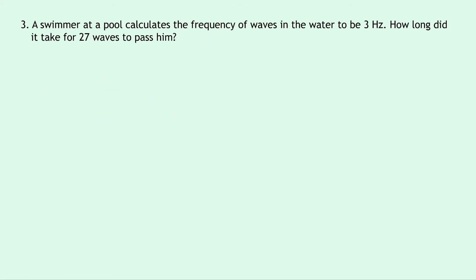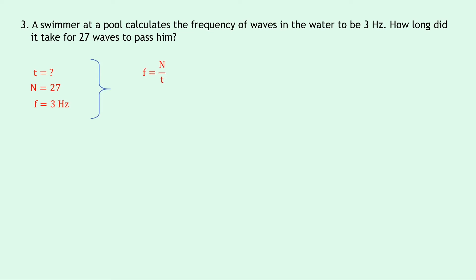And lastly question 3 — a swimmer at a pool calculates the frequency of waves in the water to be 3 hertz. How long did it take for 27 waves to pass him? So we're asked for a time in this question, T equals question mark. The number of waves is 27, and the frequency is 3 hertz. There's no prefixes used here so we don't need to do any converting. Writing down our equation, we have F equals N over T.